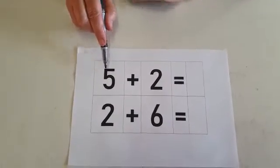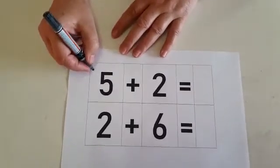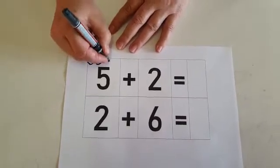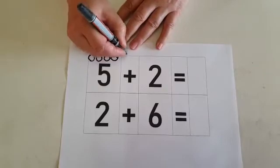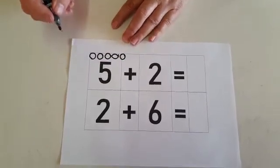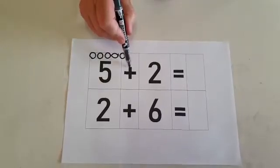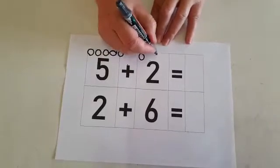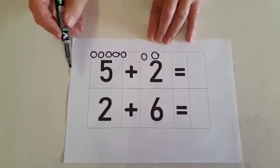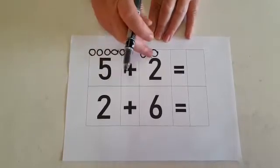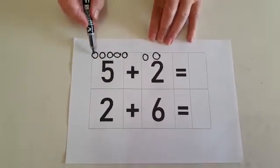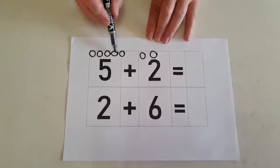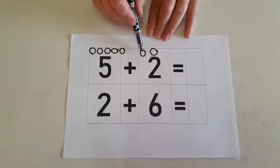Okay, number 5. Ready? 1, 2, 3, 4, 5. And remember to count as you make the circles. Plus 2. 1, 2. Now let's count it together. 5 plus 2 equals... Let's count. 1, 2, 3, 4, 5, 6, 7.